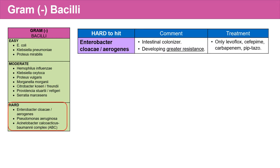The third subgroup of gram-negative bacilli are the hard-to-hit gram-negatives — and it means just that; they're very hard to destroy. The first one is Enterobacter cloacae or aerogenes, an intestinal colonizer. Enterobacter has started to develop greater resistance, such that only four antibiotics are effective against it: levofloxacin, cefepime, carbapenems, and piperacillin-tazobactam.